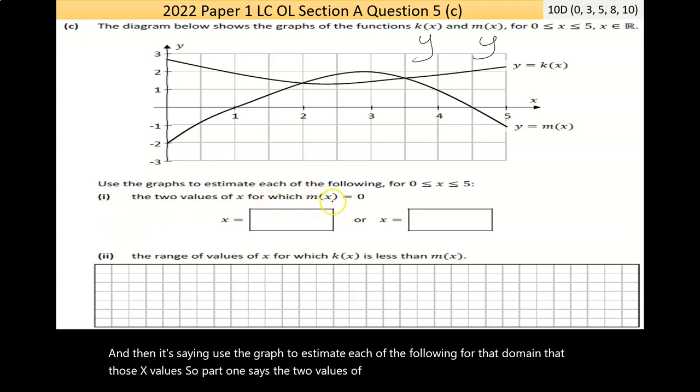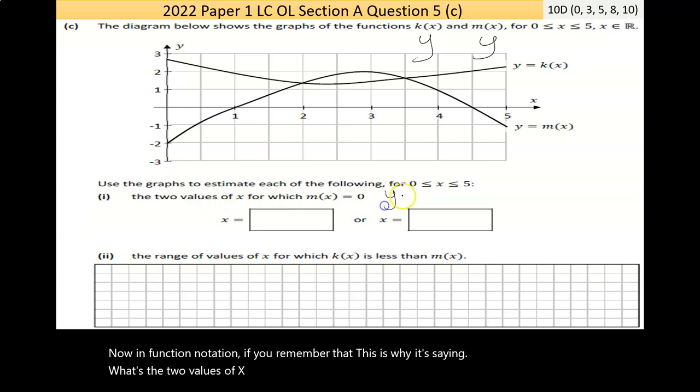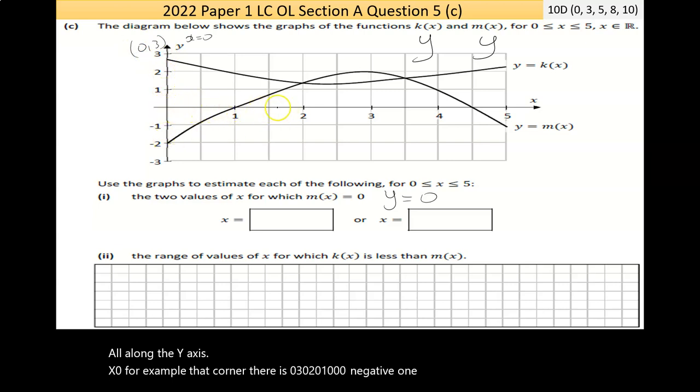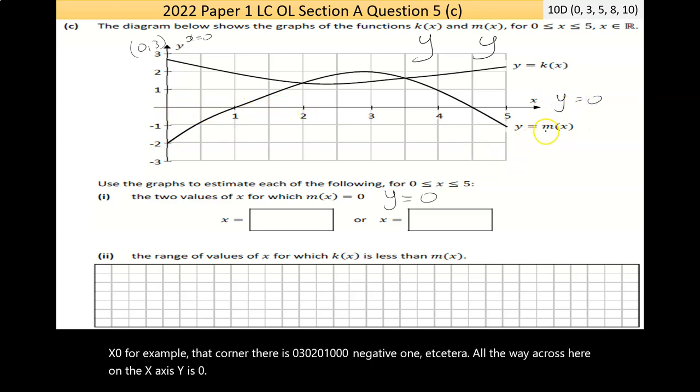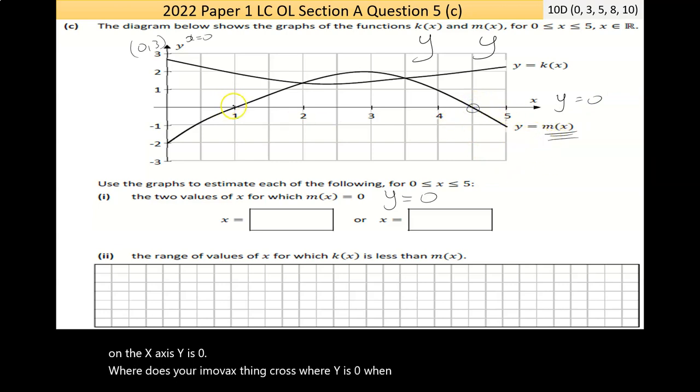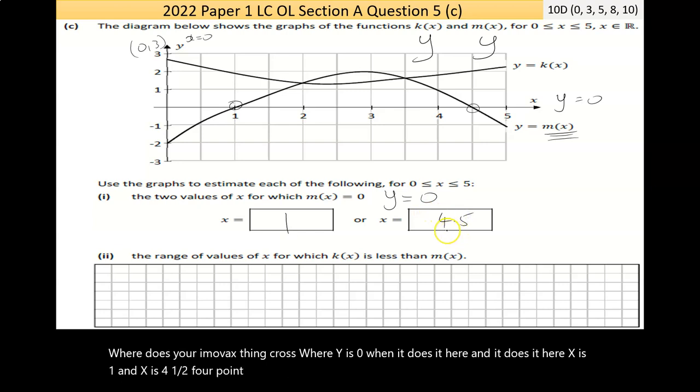Use the graphs to estimate each of the following for that domain. Part 1 says the two values of X for which M of X is equal to 0. In function notation, if you remember that this is Y, it's saying what's the two values of X for when Y is 0? You have to remember this. This is a really fundamental thing in functions and coordinate geometry. All along the Y axis, X is 0. All the way across here on the X axis, Y is 0. So where does your M of X thing cross where Y is 0? Well, it does it here and it does it here. So X is 1 and X is 4.5.